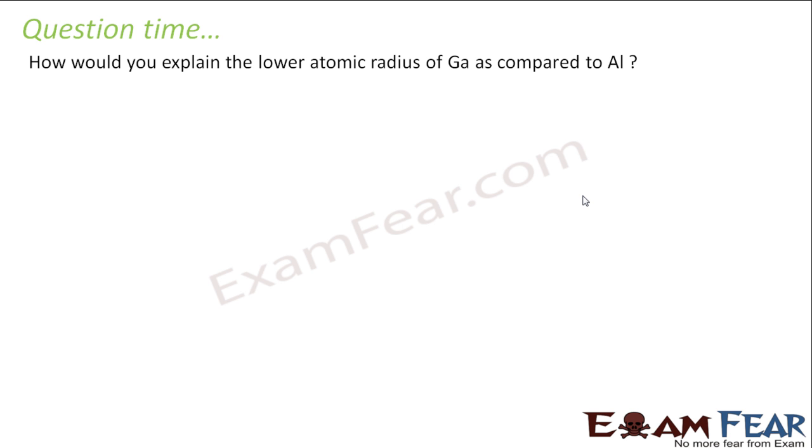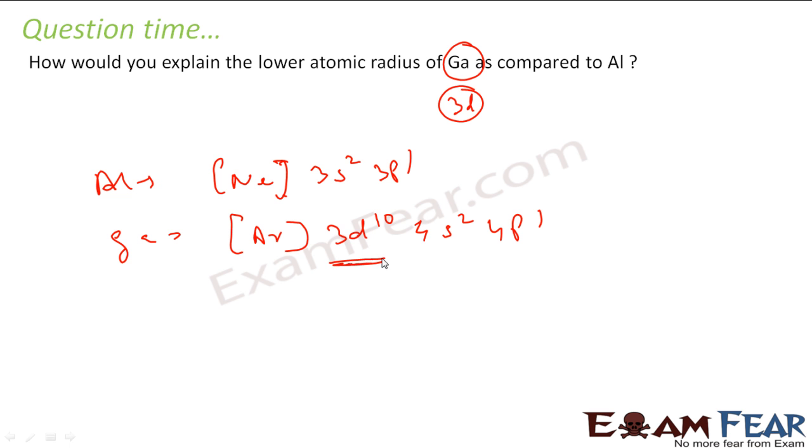How do you explain the lower atomic radius of gallium as compared to aluminum? This we have discussed actually. This is because of poor shielding of 3d electrons. If you write the electronic configuration of aluminum, it is neon 3s2 3p1. I have 3d orbitals here, and this has poor shielding. So what happens is the gallium size is less because this is aluminum and this is gallium. This gallium nucleus has more charge, the shielding is less, so it can attract electrons all the more. So it shrinks the size of gallium.